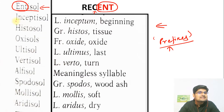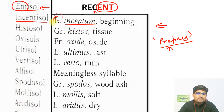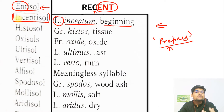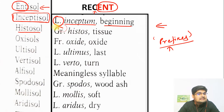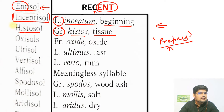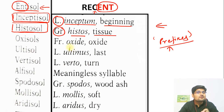Similarly, the word Inceptisol has the prefix 'inceptum' or 'inception' coming from Latin, which means beginning. So the soil is one which has started to form and is at the beginning stage. Then we have Histosol. The word 'histos' in Greek basically means tissues or cells — as in histology, the branch of biology studying cells and tissues. So Histosols have a cellular/tissue component, meaning they must be part of organic soil.